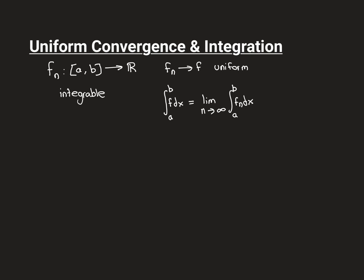I've already given you an example of how you can have a sequence of integrable functions that converges pointwise to a function that is not integrable. Now I'm going to give you another counter-example where the sequence of functions will converge to a function that is integrable, but the integral of the limit, which will just be a pointwise limit, is not equal to the limit of the integrals. So this theorem can break in two different ways if you take away the uniform convergence.